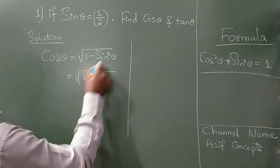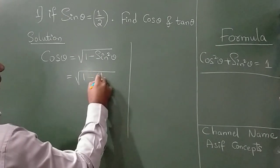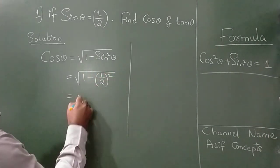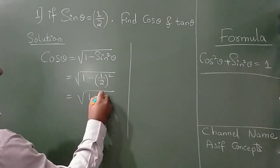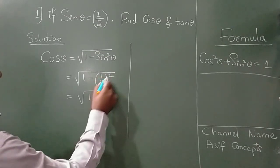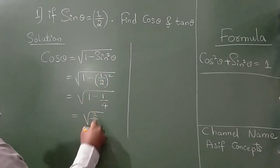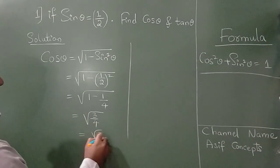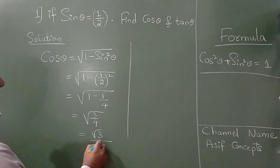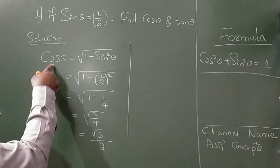Now square root of 1 minus what is sin? It is 1 by 2 whole square. So square root of 1, square is 1, 2 square is 4. If you take LCM of this, you will get 3 by 4. So root 3 write as it is and square root of 4 is 2. So this is the cos theta value.